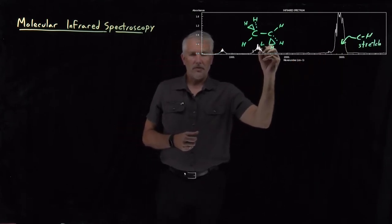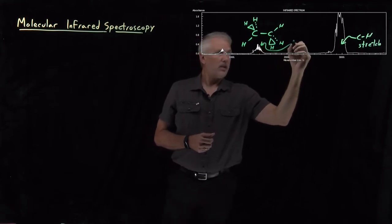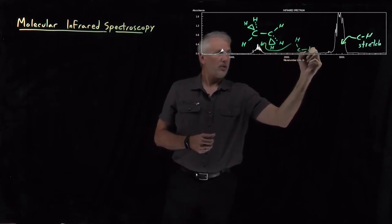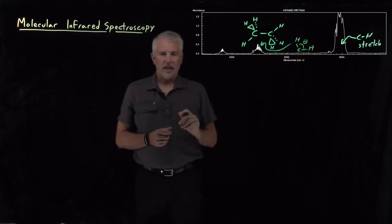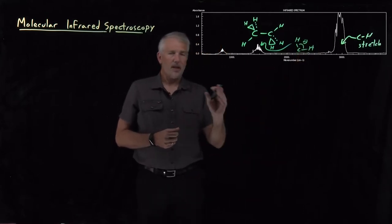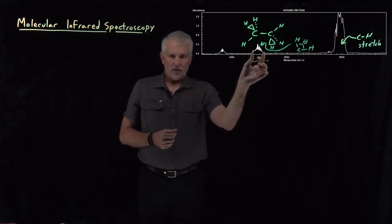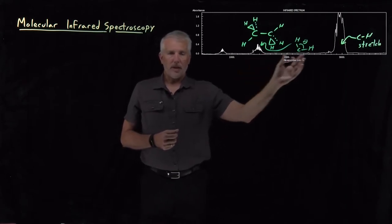This set of bands would be the angle bending modes, for example, those HCH angle bending modes. So there's different regions in the spectrum that absorb light of different types.